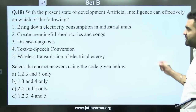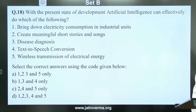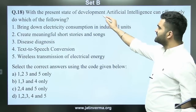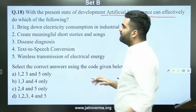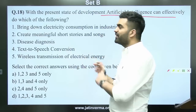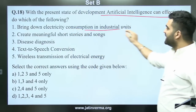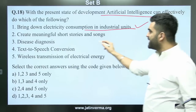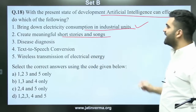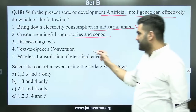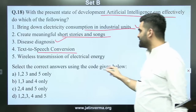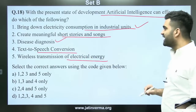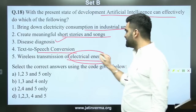Question 18: With the present state of development, artificial intelligence can effectively do which of the following? Options include: bringing down electricity consumption in industrial units, creating meaningful short stories and songs, disease diagnosis, text-to-speech conversion, and wireless transmission of electrical energy. Is wireless transmission of electrical energy possible today?